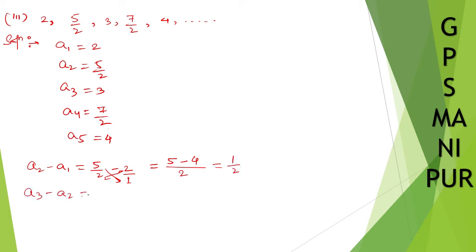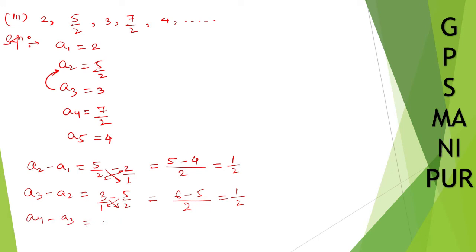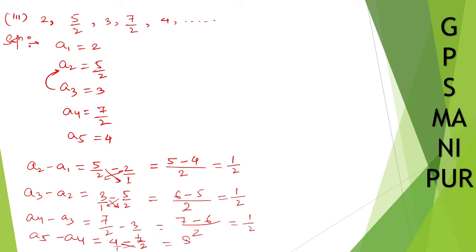A3 minus A2 = 3 minus 5/2 = (6 minus 5)/2 = 1/2. A4 minus A3 = 7/2 minus 3 = (7 minus 6)/2 = 1/2. A5 minus A4 = 4 minus 7/2 = (8 minus 7)/2 = 1/2.